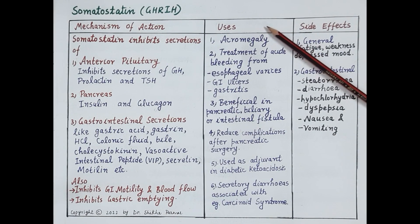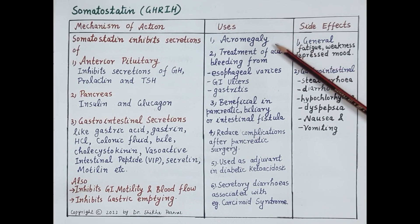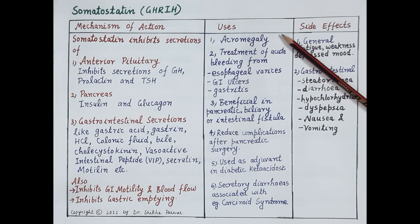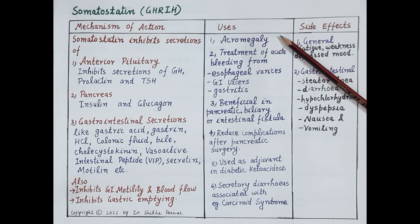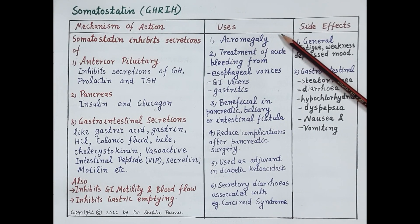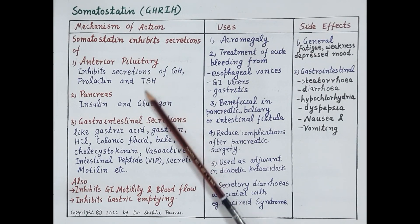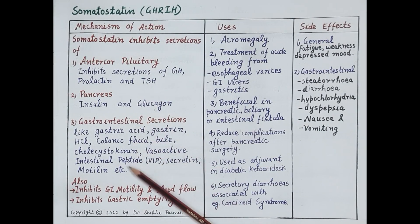Now let us discuss the uses of somatostatin. Somatostatin can be used in the treatment of acromegaly, which is caused by excess production of growth hormone during adulthood. However, somatostatin has limited use in acromegaly and most other indications because it has a very short duration of action — its half-life is only 2 to 3 minutes. It is also not preferred since it does not specifically inhibit growth hormone but also inhibits many other secretions.